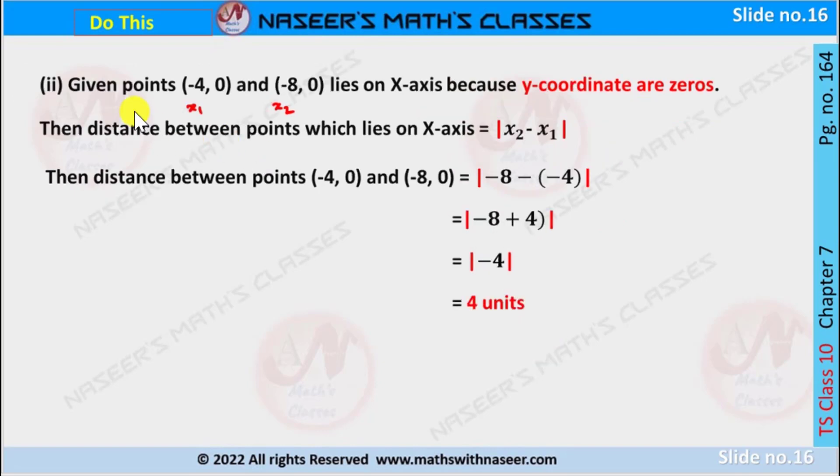Now we are finding the distance between (-4, 0) and (-8, 0). Here y-coordinates are zeros, then we can say that these points lie on x-axis. So x-coordinate -4 is x₁ and x-coordinate -8 is x₂.